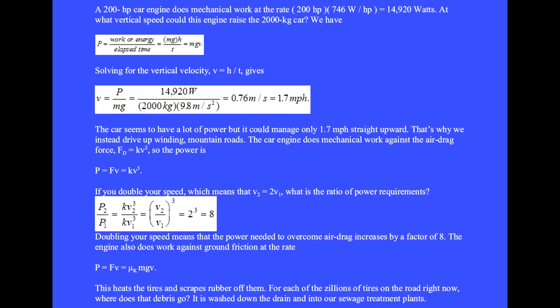A 200 horsepower car engine does mechanical work at the rate 200 horsepower times 746 watts per horsepower equals 14,920 watts. At what vertical speed could this engine raise the 2000 kilogram car?